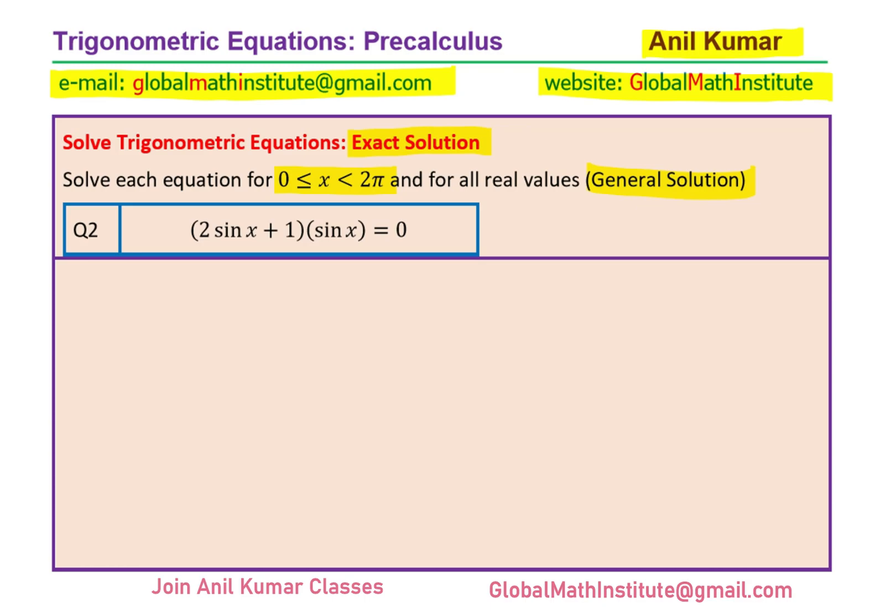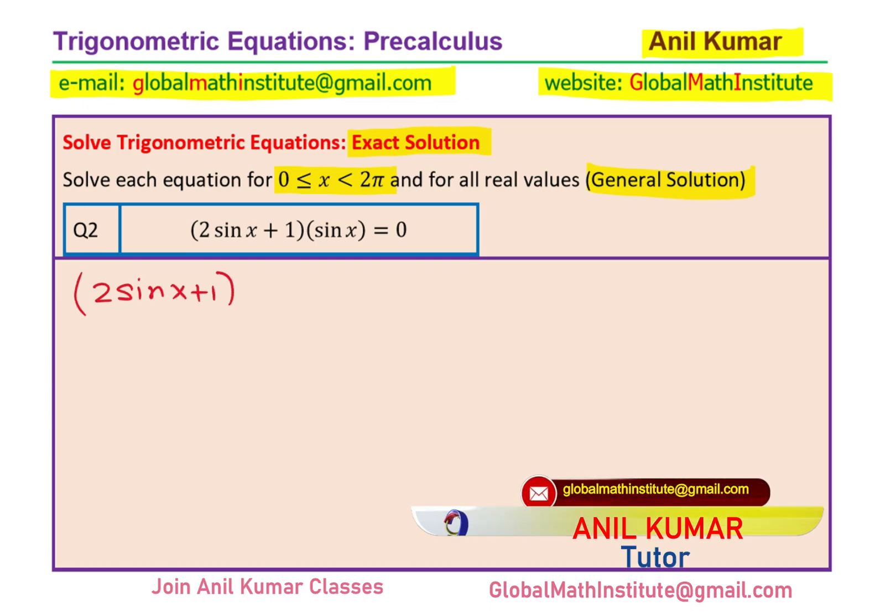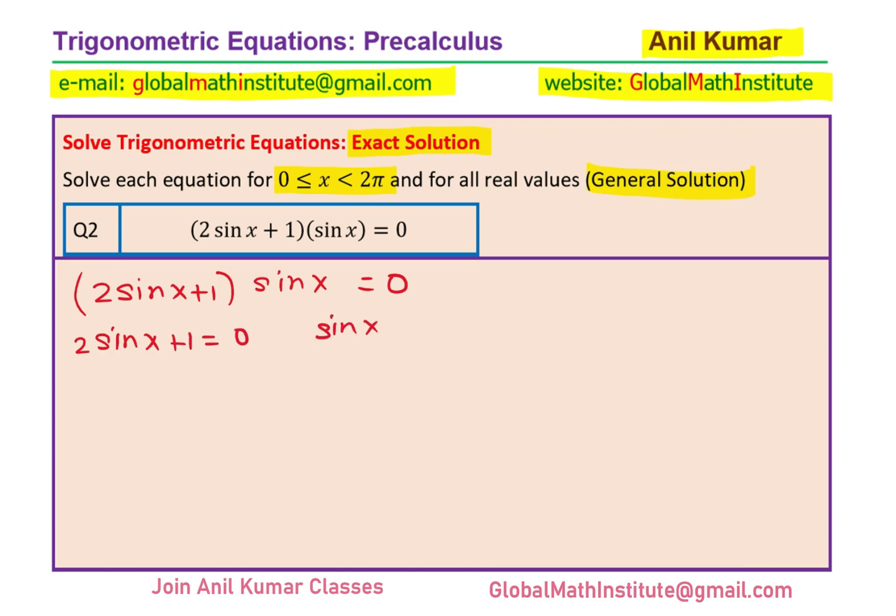Let us take up this question, which is (2 sin x + 1)(sin x) = 0. Whenever you want to solve this equation, both these factors separately equate them to 0. So we have 2 sin x + 1 = 0 and sin x = 0. This gives us sin x equal to -1/2, and here we have sin x = 0.